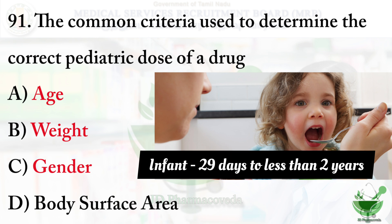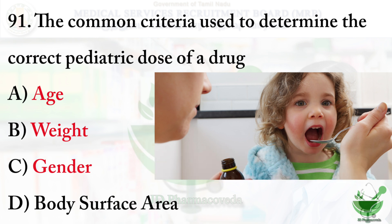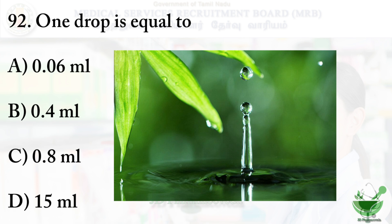Infant means 29 days to less than 2 years; child means 2 years to less than 12 years. Question number 92: one drop is equal to — the options are: option A — 0.06 ml, option B — 0.4 ml, option C — 0.8 ml, and option D — 15 ml.